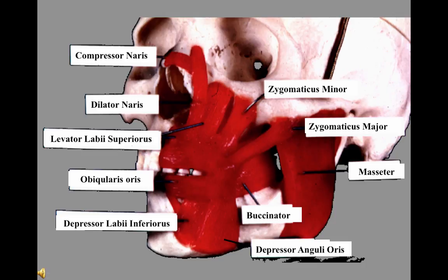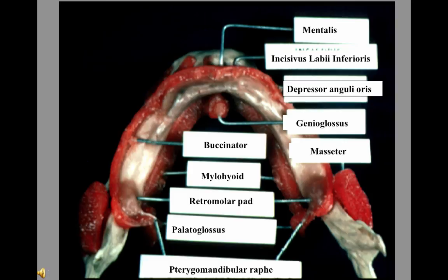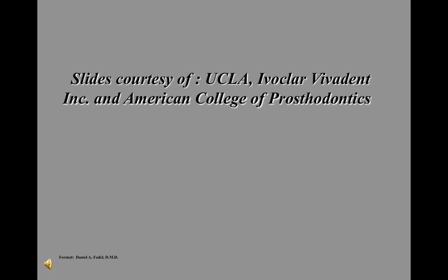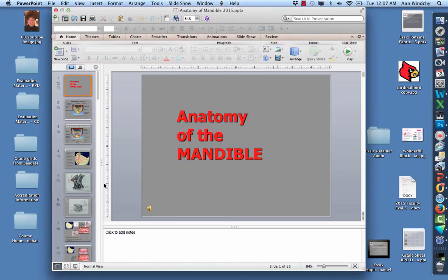This slide shows a wax-up that a student did with red wax showing the various muscles on the face. Here is a slide showing a section of the mandible where you can see the actual muscle dissection and their position relative to the mandible. Special thanks to the University of California Los Angeles, Ivoclar Vivadent Company, the American College of Prosthodontists, and Dr. Jack Morris for some of the materials in his collection.